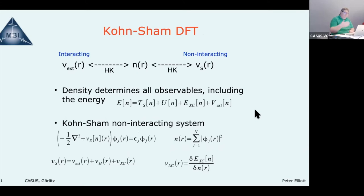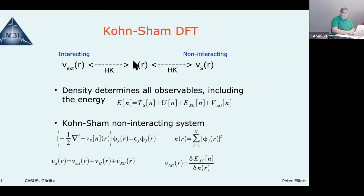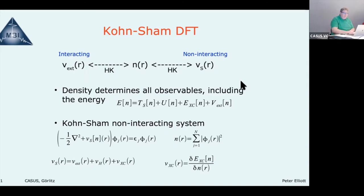Then Kohn and Sham in 1965 went further and thought about how to practically apply the Hohenberg-Kohn theorem. They showed you can map the interacting system to a non-interacting system, and there is a unique Kohn-Sham potential for non-interacting electrons that gives you the same density. Since knowing the density gives you everything — in principle all observables.